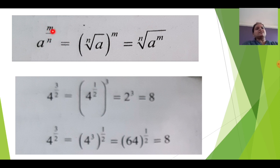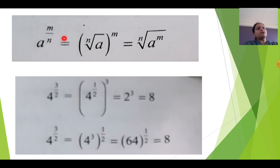M is nothing but a power and N is nothing but the root value. These two points you have to remember. M is nothing but a power and N is nothing but a root. So the numerator is nothing but a power and the denominator is nothing but a root.